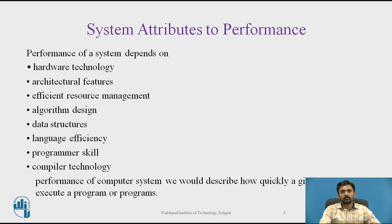When we talk about the performance of a computer system, we would describe how quickly a given system can execute a program or programs. We look at different factors which help us execute any system faster, such as hardware technology, architectural features, and efficient resource management.